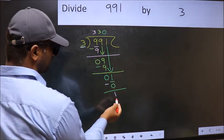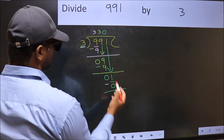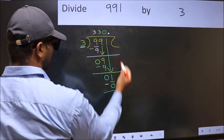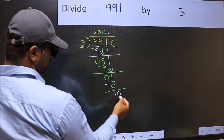And 1 is smaller than 3. So now you can put a dot and take 0. So 10.